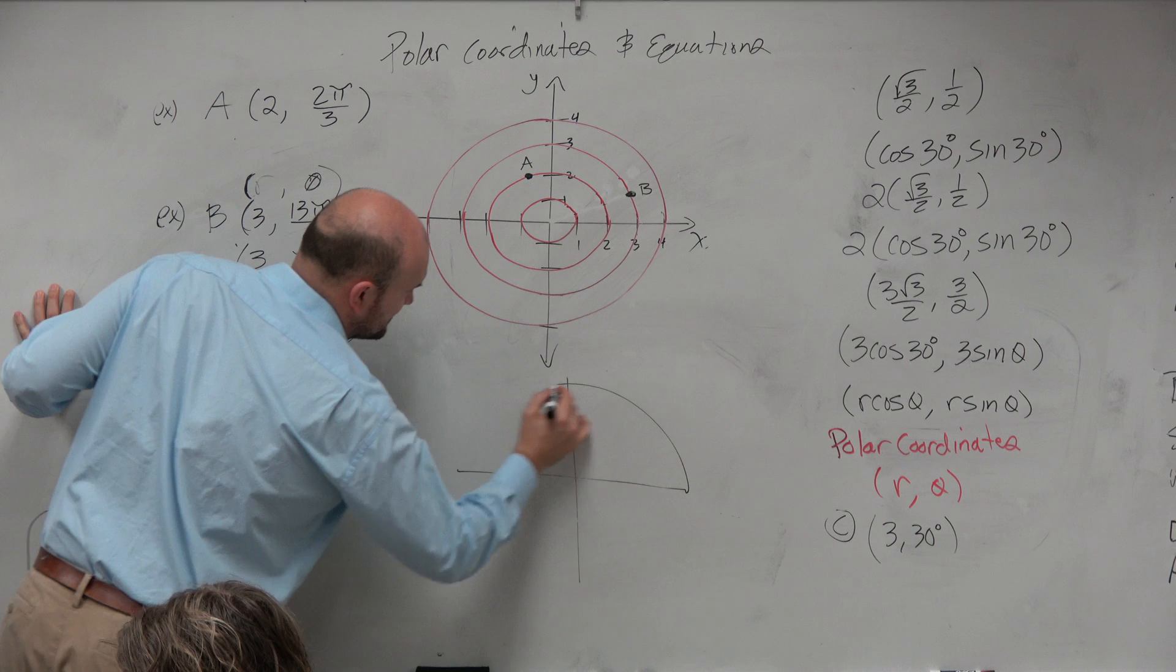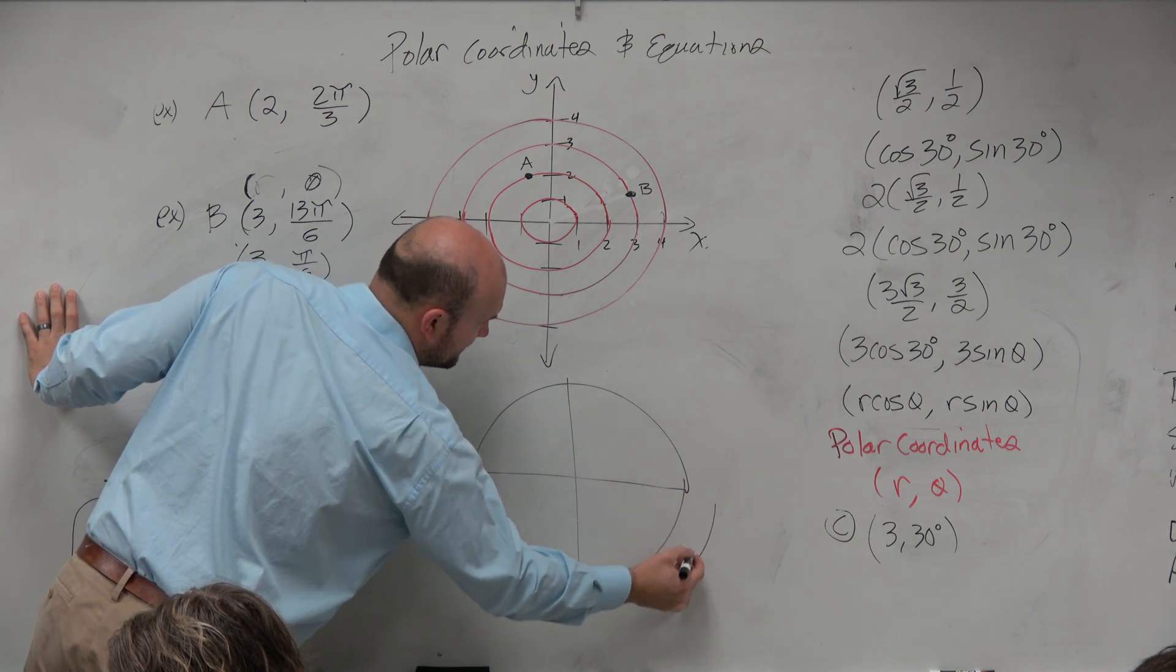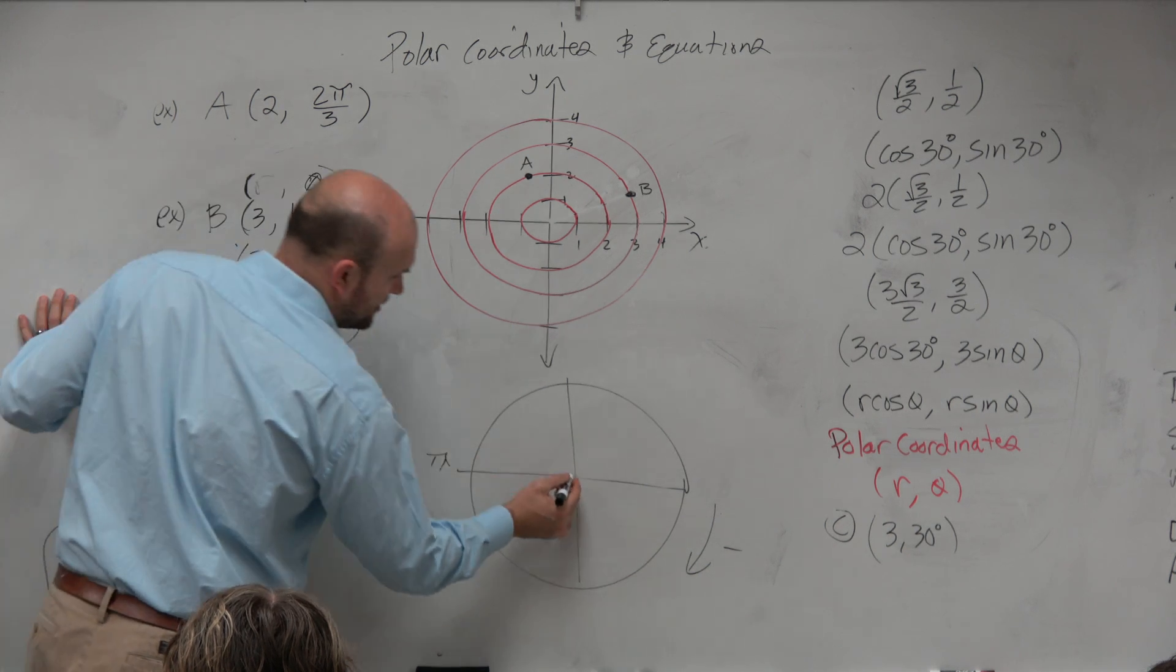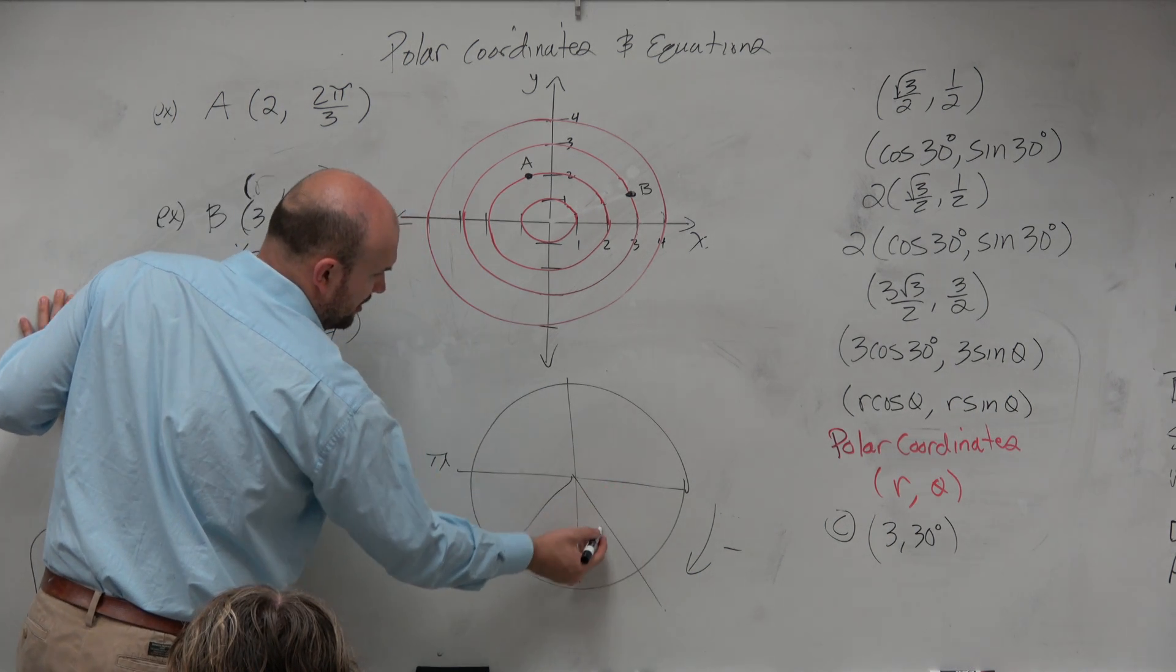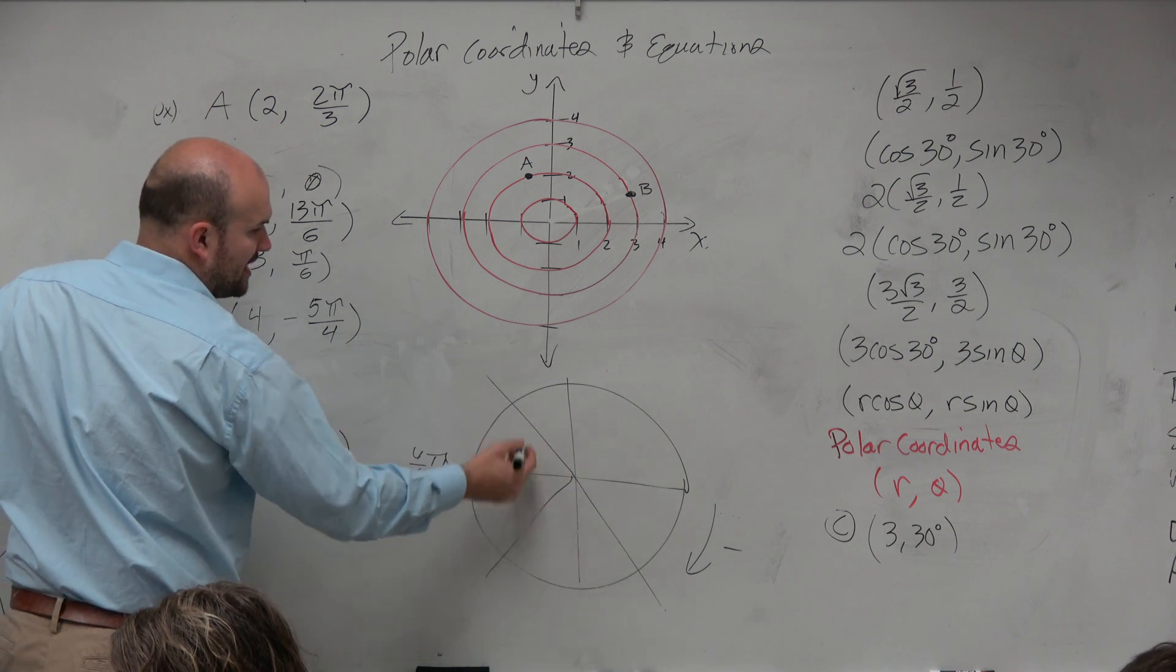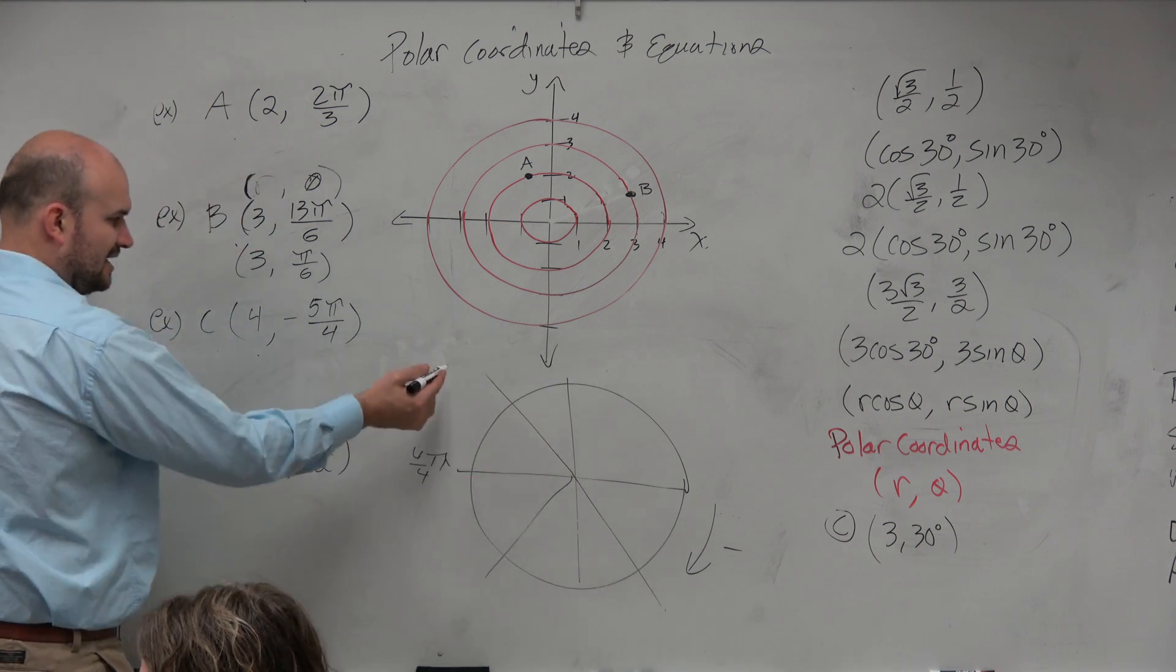Remember, guys, this is in fourths. We're going in the negative direction. Halfway around circle is π, but we're breaking this down into four equal units. So 1 fourth, 2 fourths, 3 fourths, 4 fourths. If we want to go to 5 fourths, that's just going to be 1 extra fourth. And again, we're going in the negative direction.